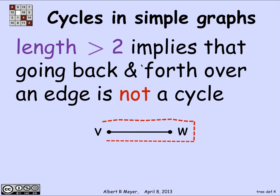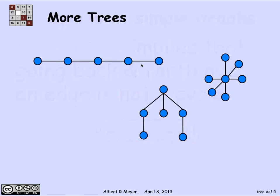It also rules out the cycle of length 0, which you get by taking a vertex all by itself. With that technical definition, we now know what a cycle is in a simple graph and we understand the definition of tree. Here are some more pictures of trees — simple graphs with no cycles.